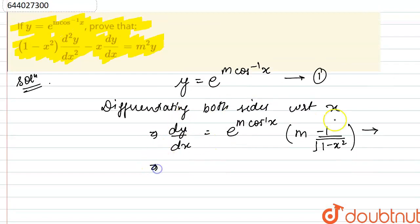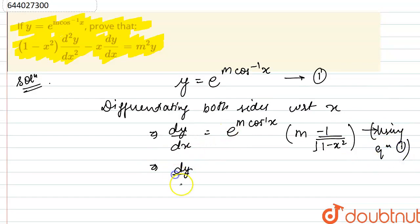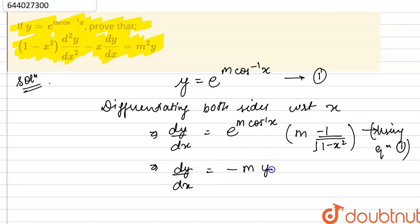Now using equation 1, e raised to the power m into cos inverse x is simply y. So we get dy/dx equals minus m into y divided by root of 1 minus x square.